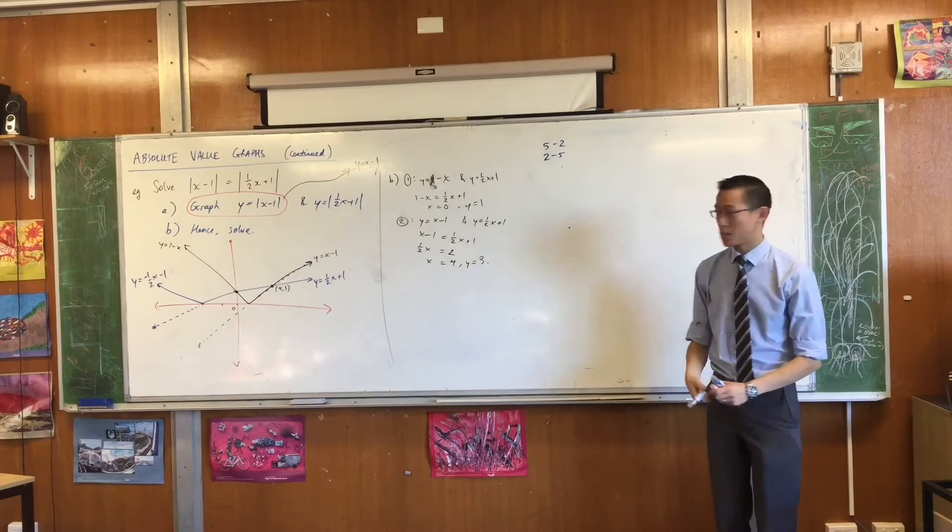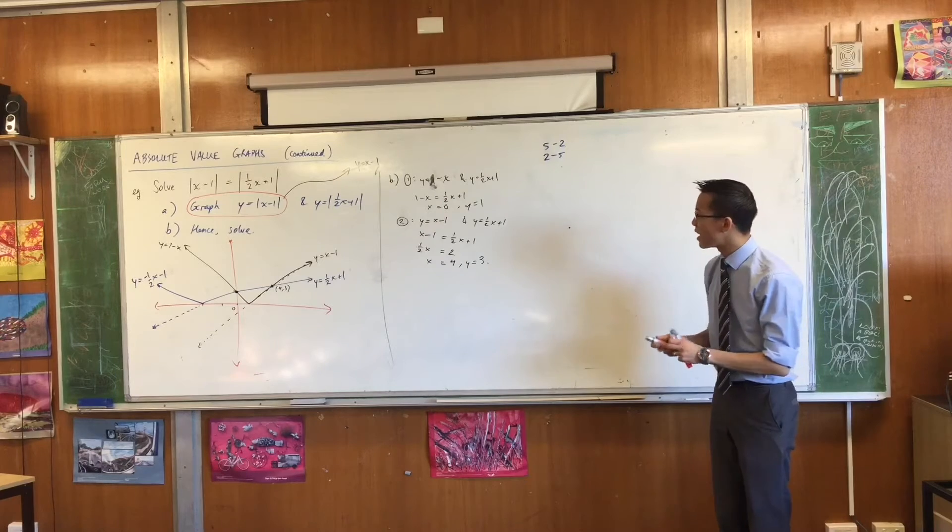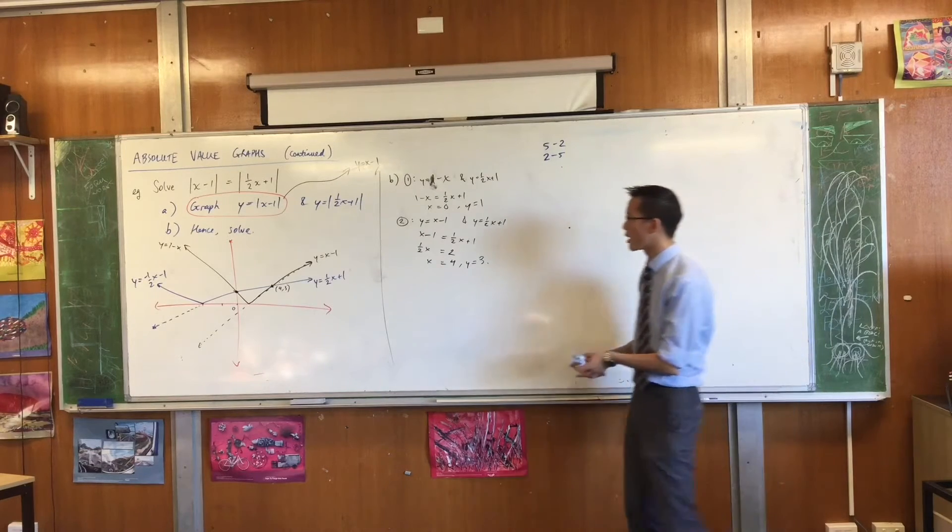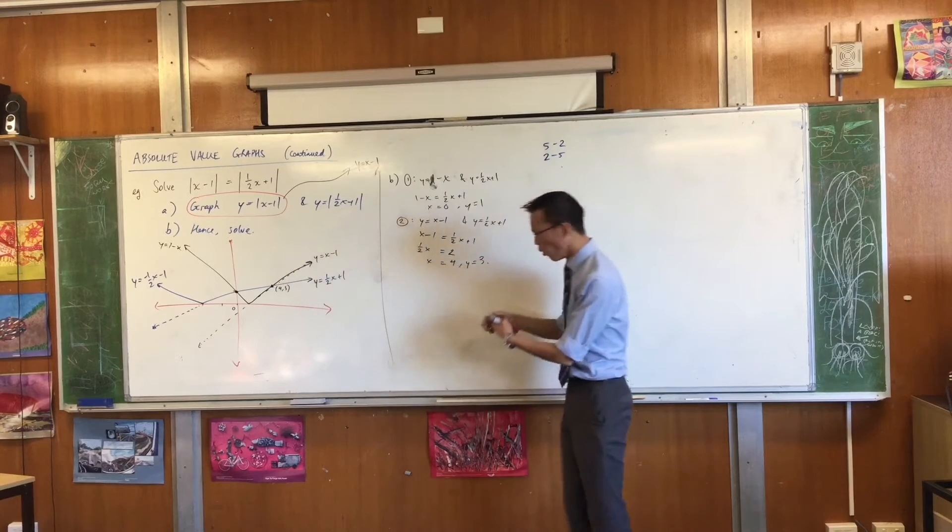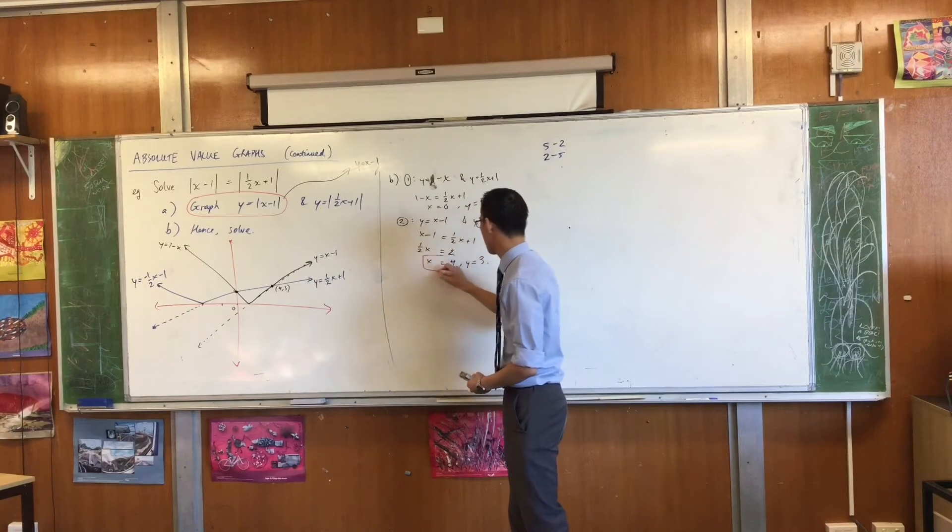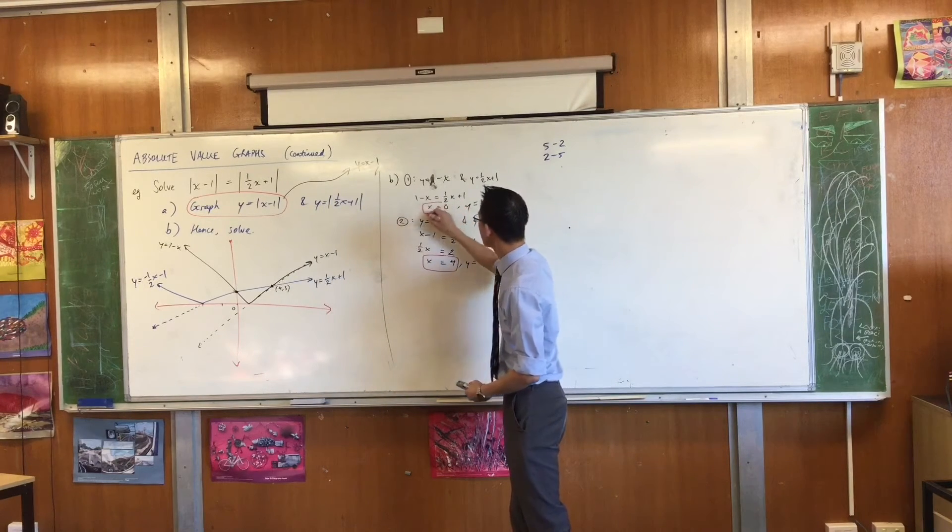In the same way as before, I should pop that in to get a y coordinate. y equals, let's see, x equals 4. y is going to be 3. Done. So I have my two points of intersection, and I'm done.